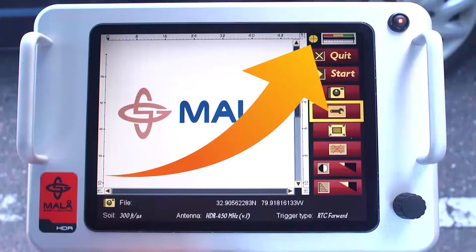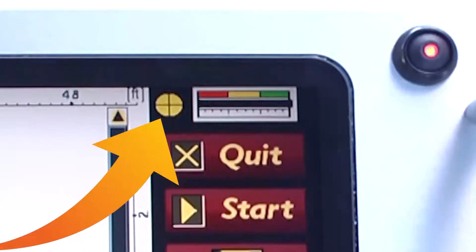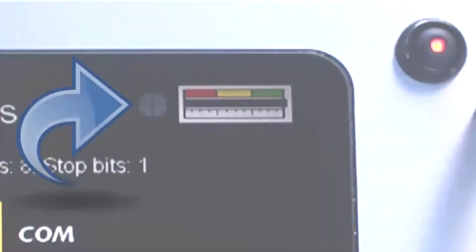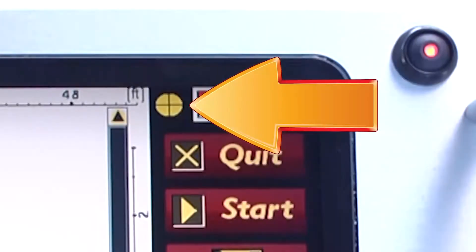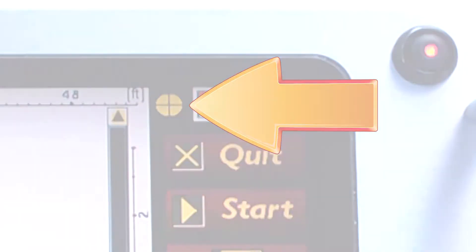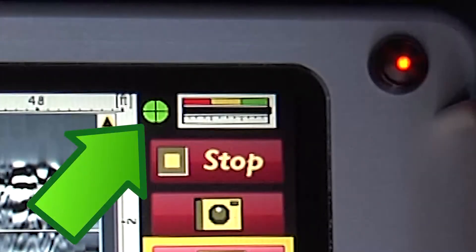At the upper right of the display, the circle with the cross is the GPS strength indicator. Gray indicates no satellites are being detected. Yellow indicates some satellites are being detected. Green indicates the maximum number of satellites are being detected.